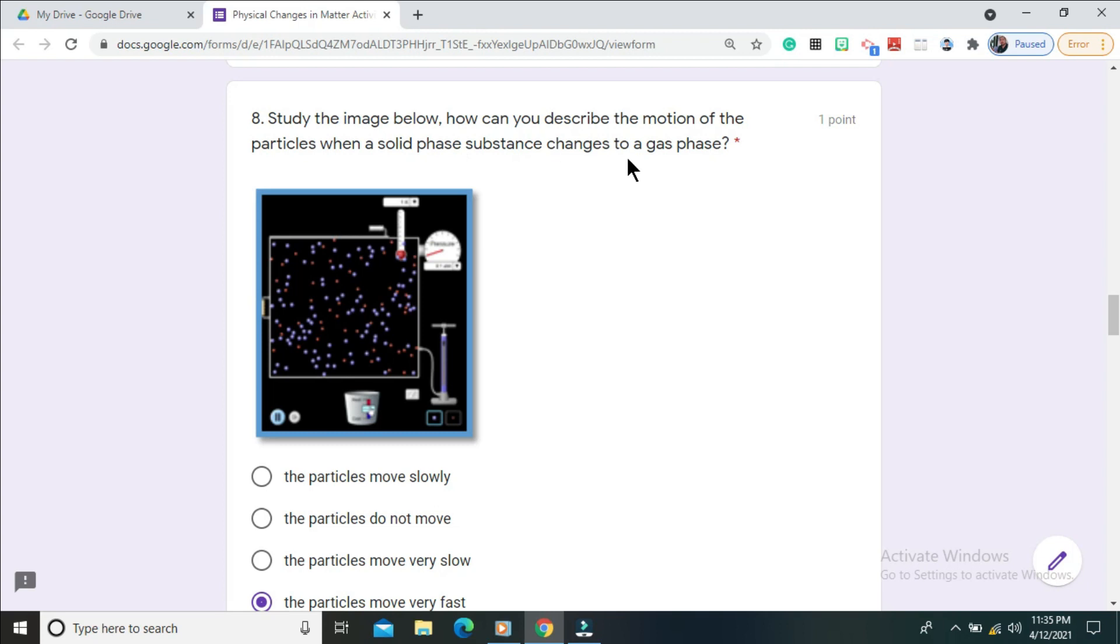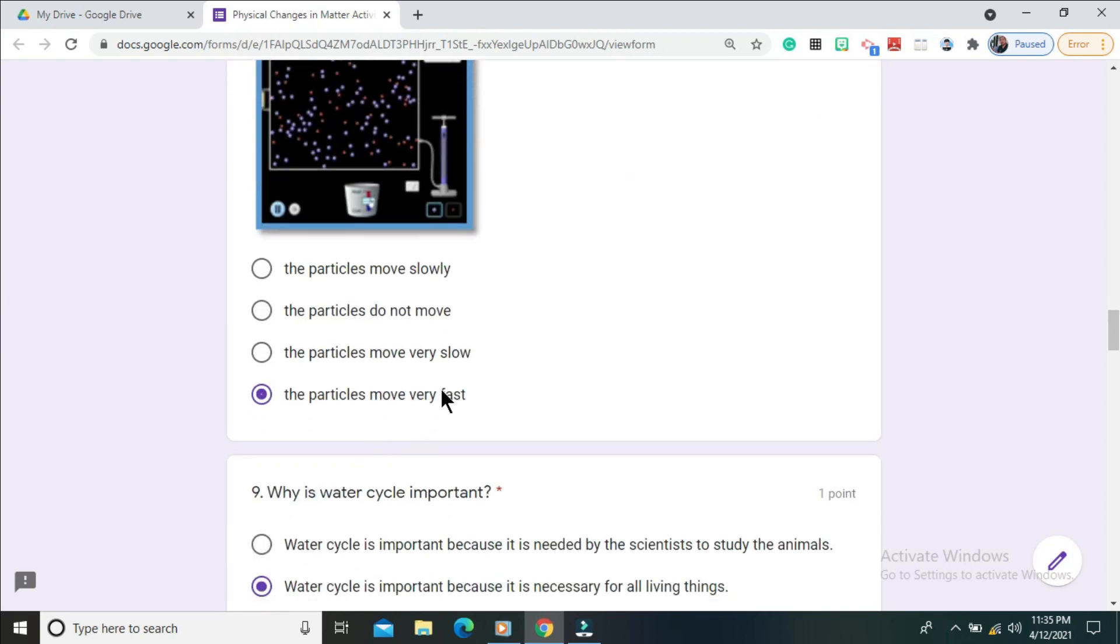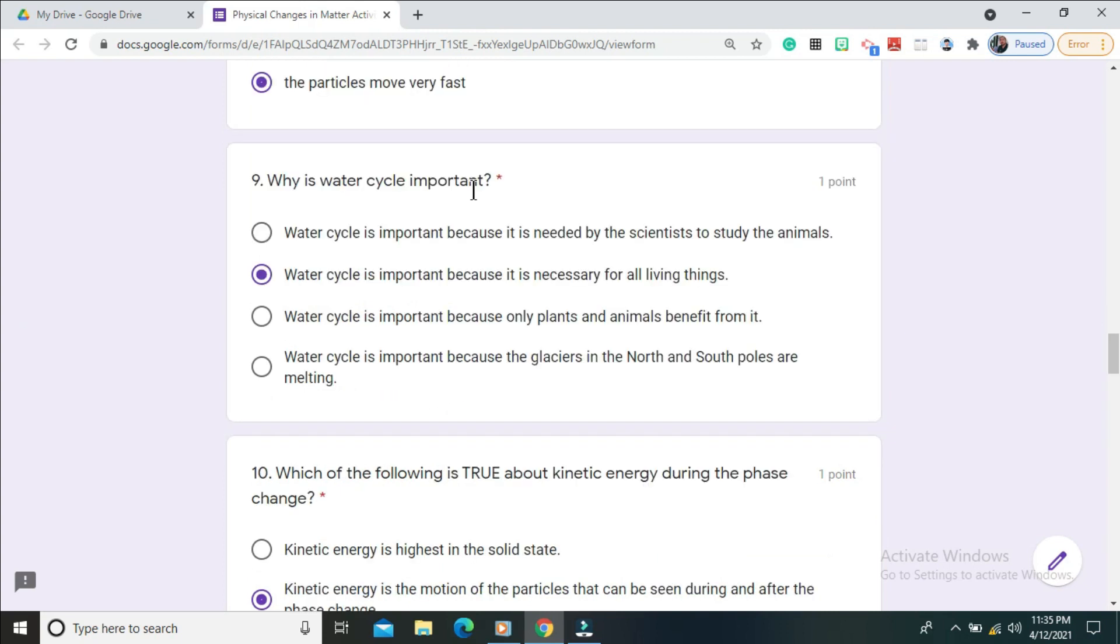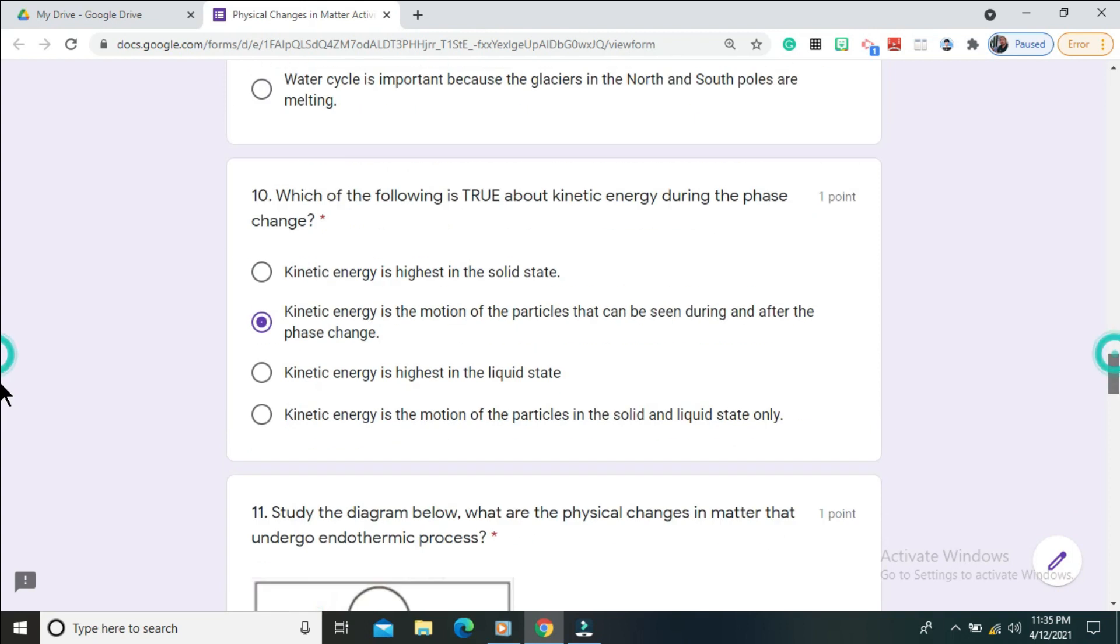The correct answer is the particles move very fast. Question number nine: why is water cycle important? Water cycle is important because it is necessary for all living things. Question number ten: which of the following is true about kinetic energy during the phase change?